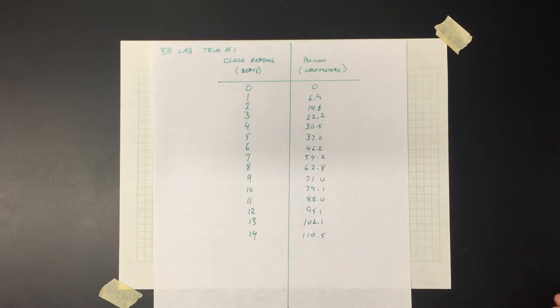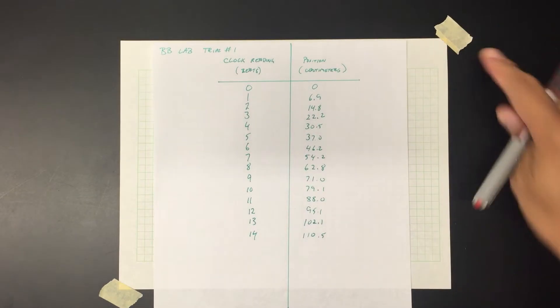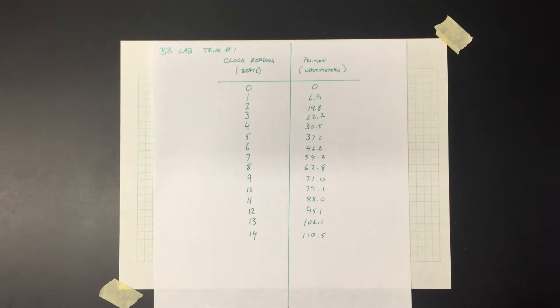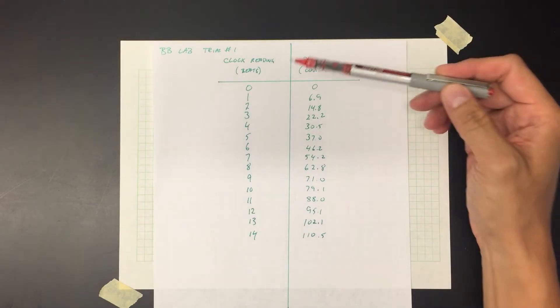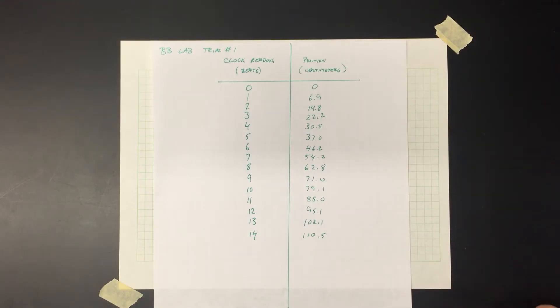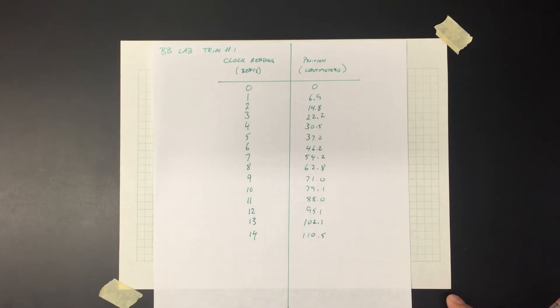In lab today you got some data — you rolled a BB down a tube and looked at the position of the BB at different clock readings as it rolled down the tube. Now I'm going to show you how to make a graph using all the important parts of a graph that you read about in the student guide to graphical analysis. The first thing we're going to do: I've got a piece of graph paper, so the graph has to be done on graph paper.